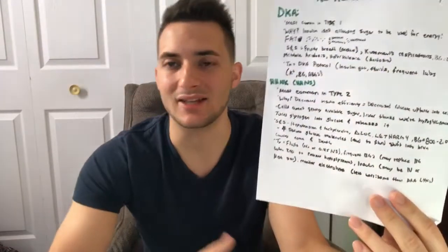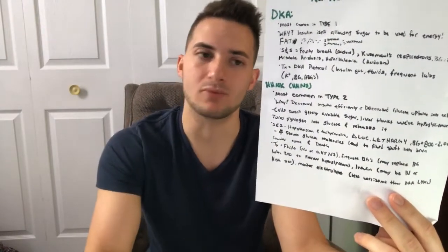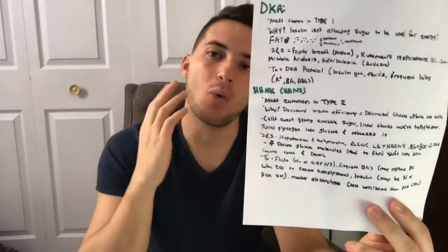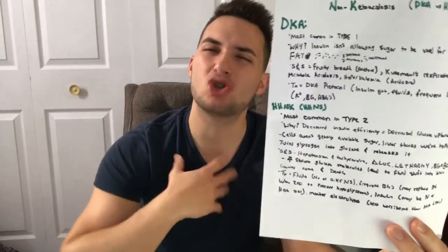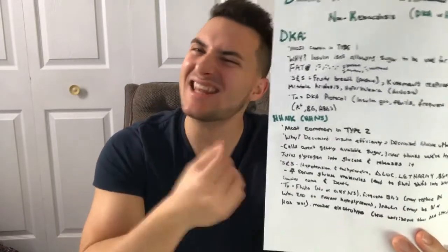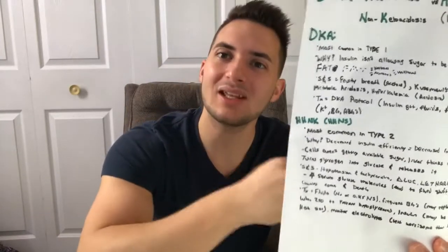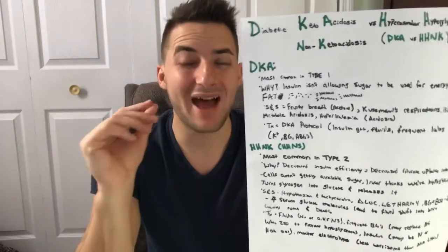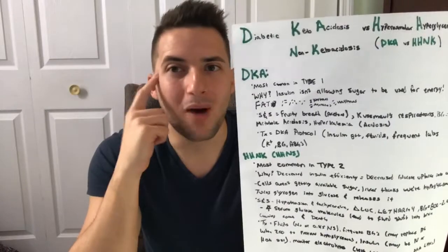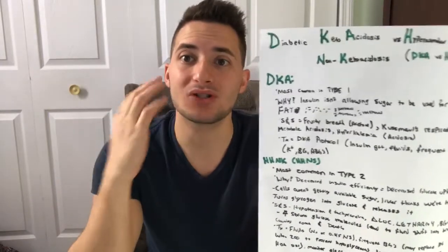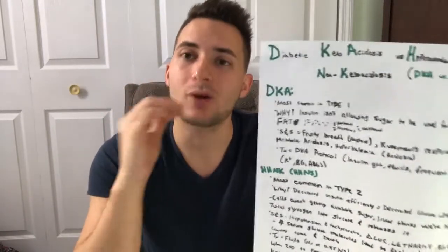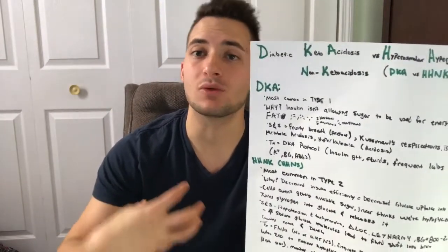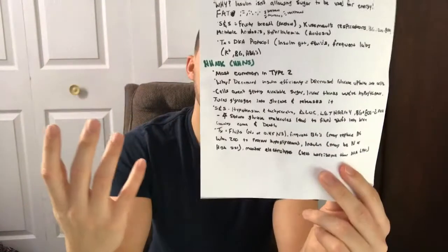Now we have HHNK — hyperosmolar hyperglycemic non-ketotic syndrome, some people call it HHNS. It is more common in type 2 diabetics. Type 2 diabetics, in comparison to type 1, do produce insulin — it is just that it is inefficient. It is not completely allowing cells to take up sugar and use it for energy. So the body recognizes it's getting sugar, but not enough. The body thinks it's hypoglycemic. The liver says this person is running a marathon and hasn't eaten anything, so it starts gluconeogenesis — it breaks down glycogen and produces glucose and puts it into the bloodstream.